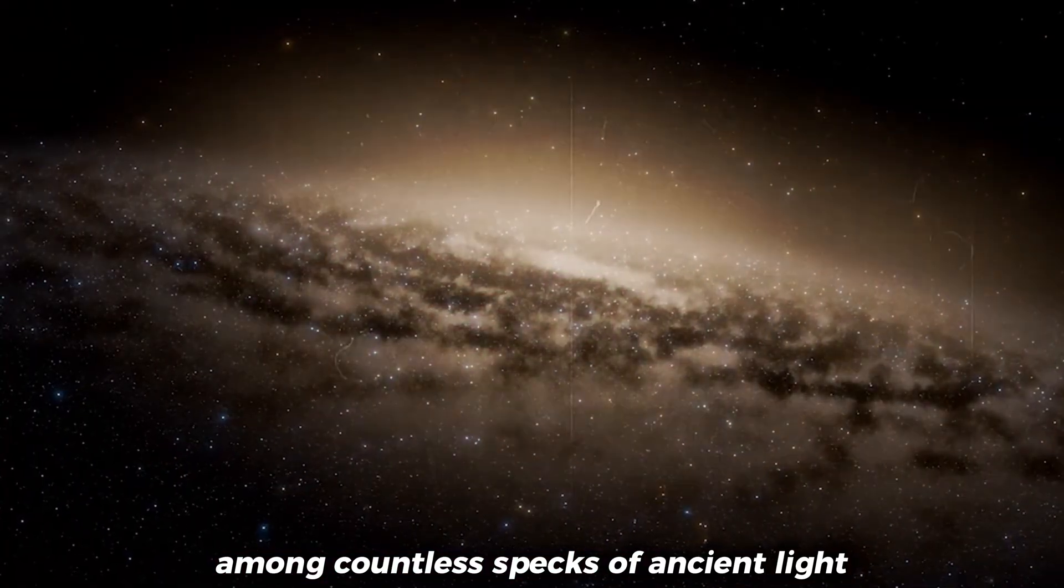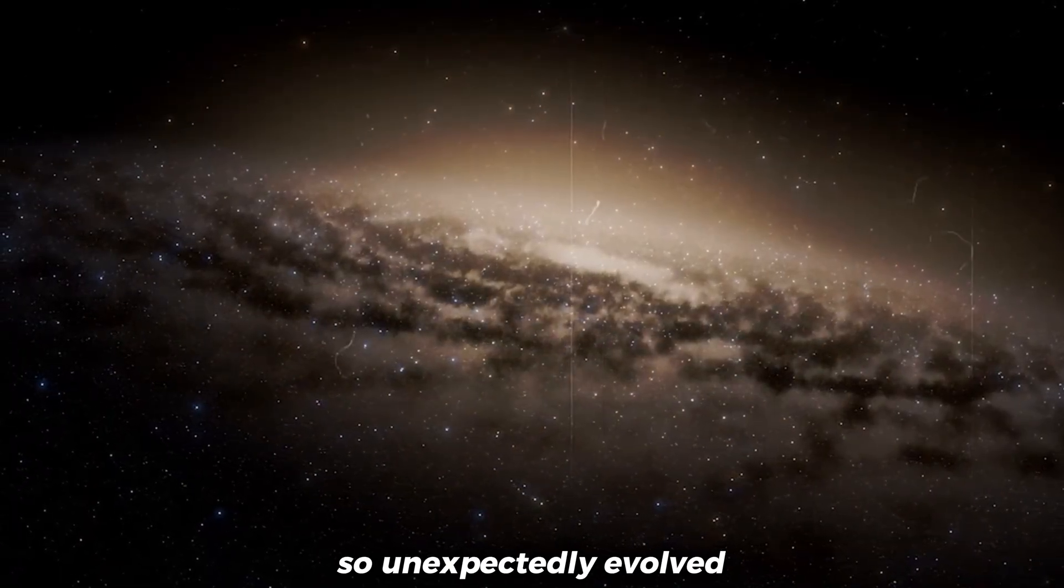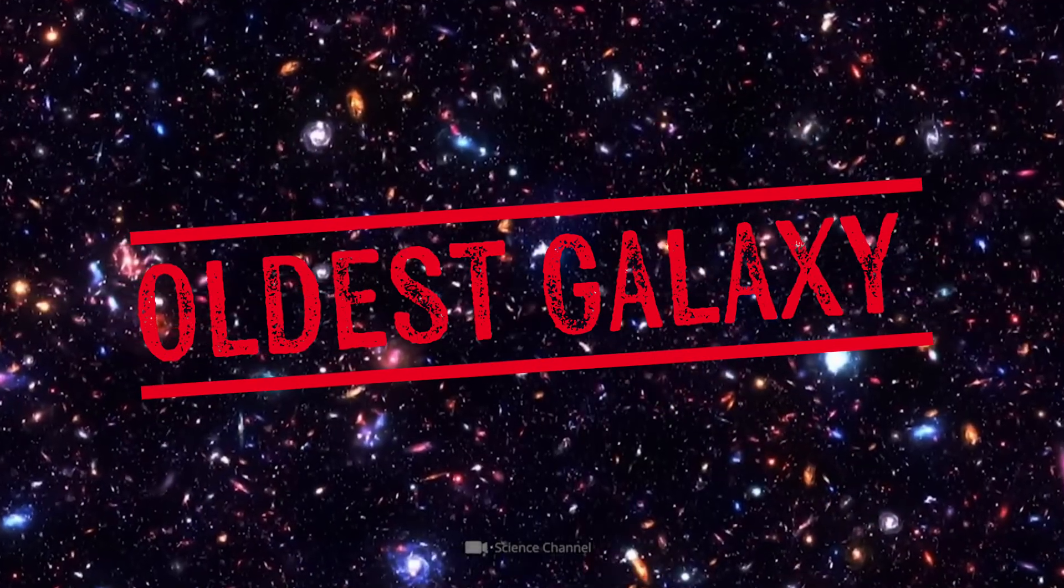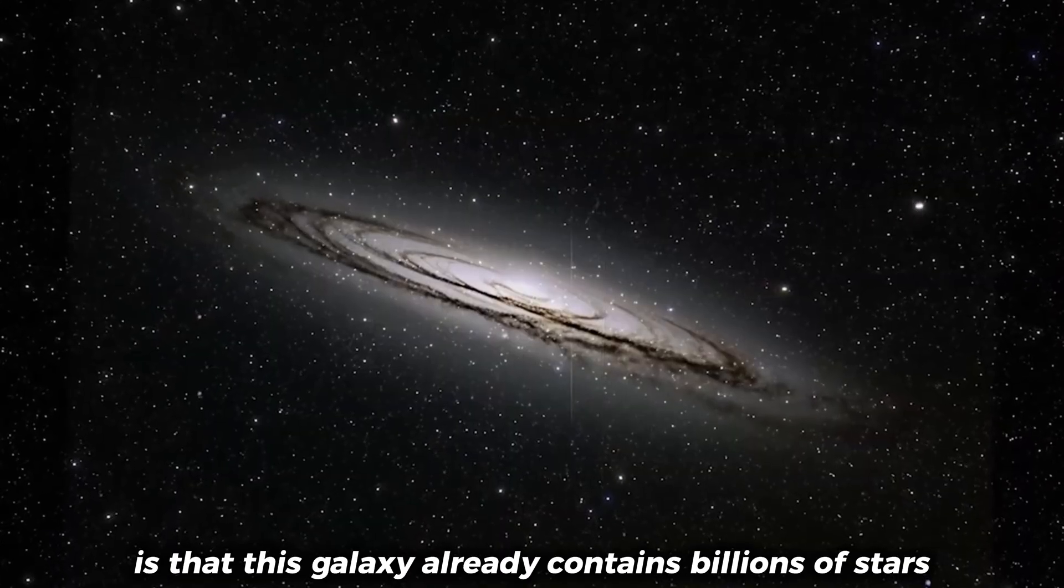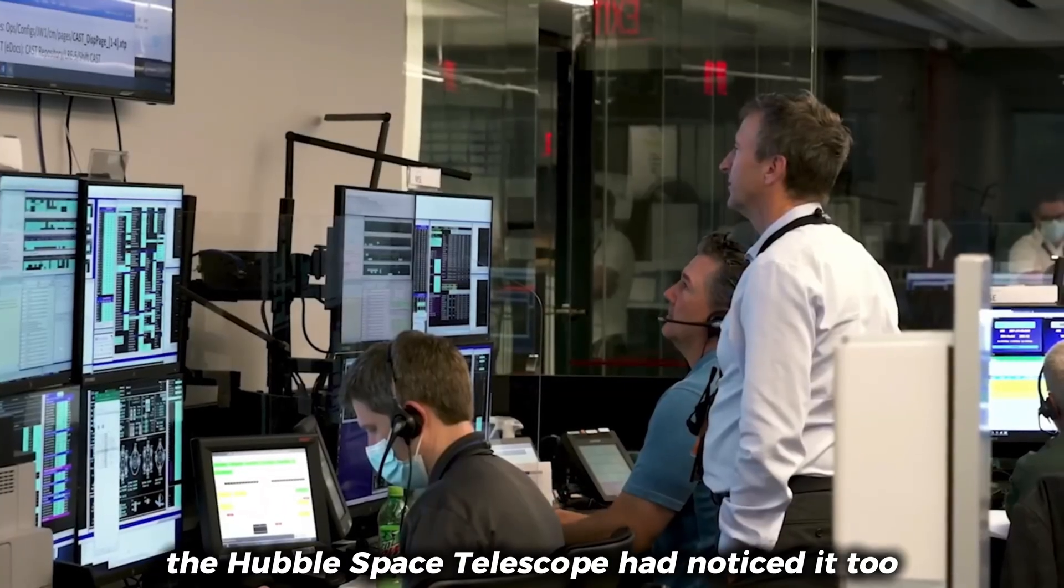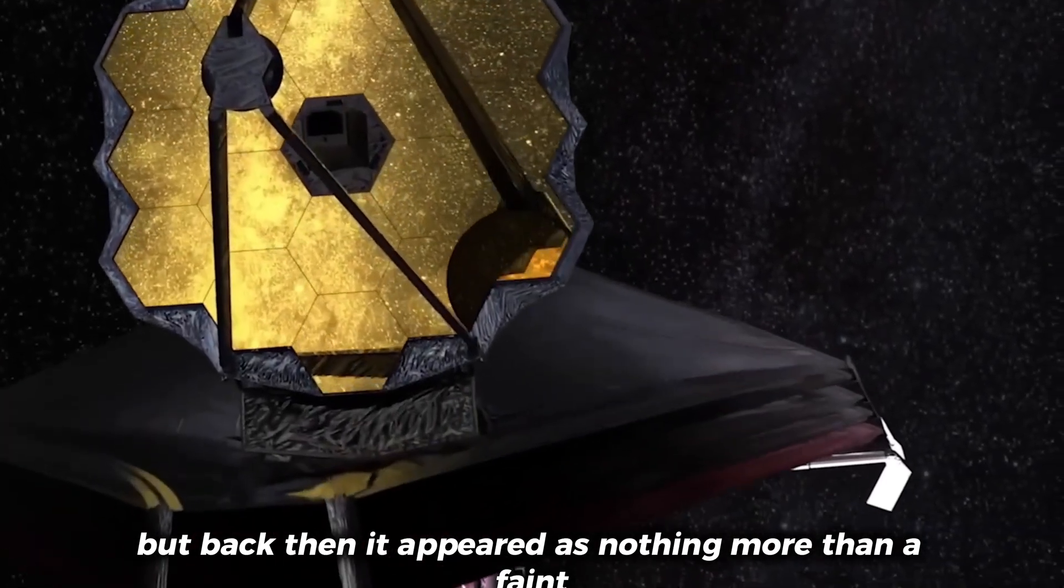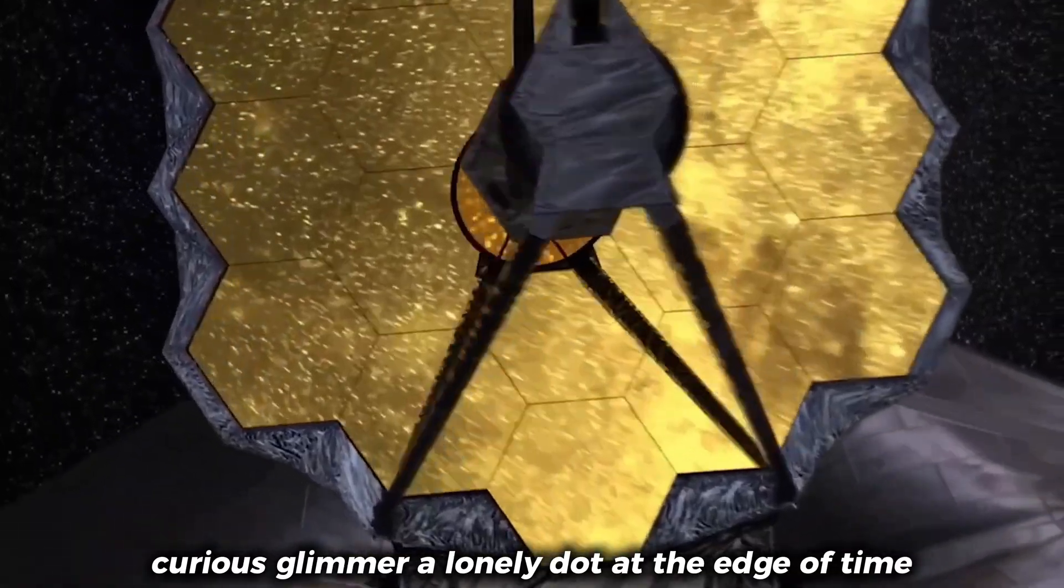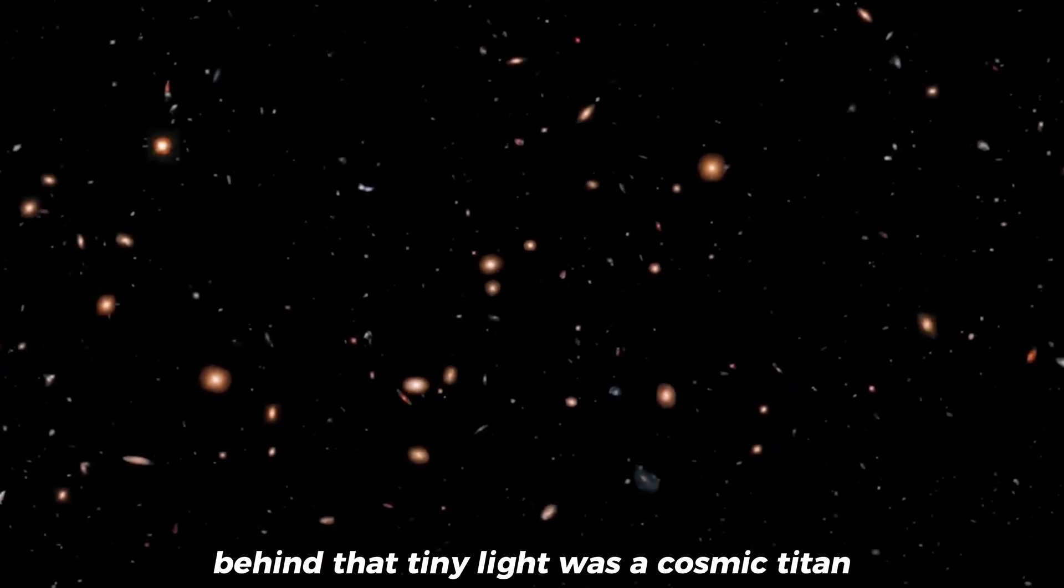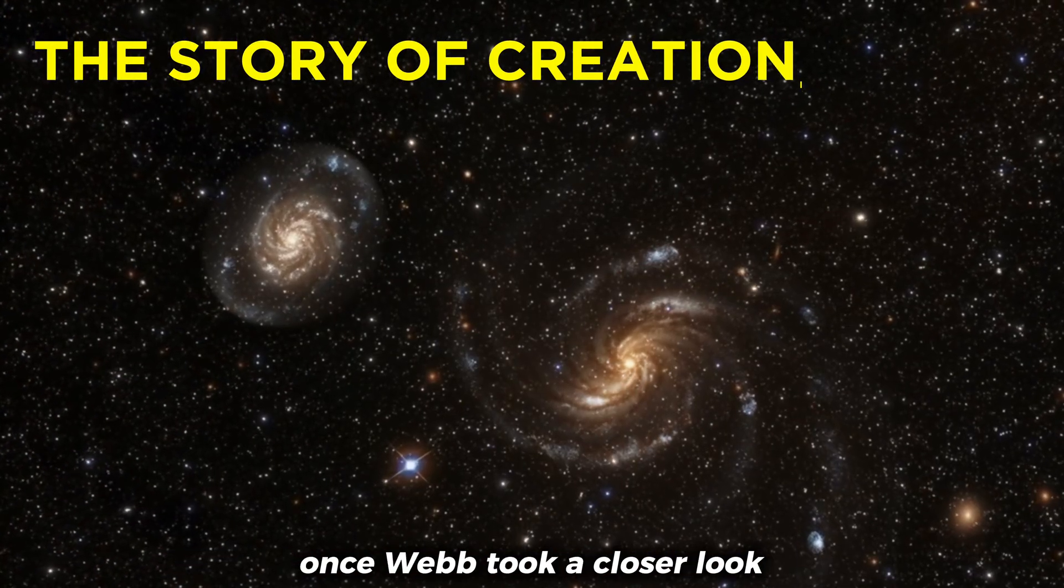Among countless specks of ancient light, it found a galaxy so massive, so unexpectedly evolved, that it's now believed to be one of the oldest galaxies ever discovered. What's truly mind-blowing is that this galaxy already contains billions of stars. Just two years ago, the Hubble Space Telescope had noticed it too, but back then it appeared as nothing more than a faint, curious glimmer, a lonely dot at the edge of time. No one suspected that behind that tiny light was a cosmic Titan, a galaxy that would retell the story of creation once Webb took a closer look.